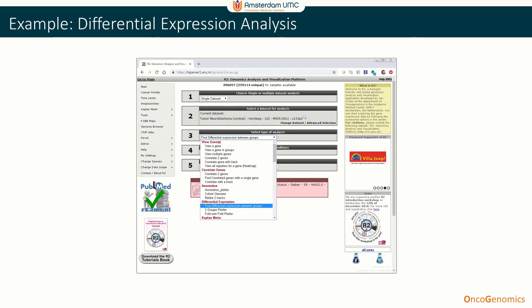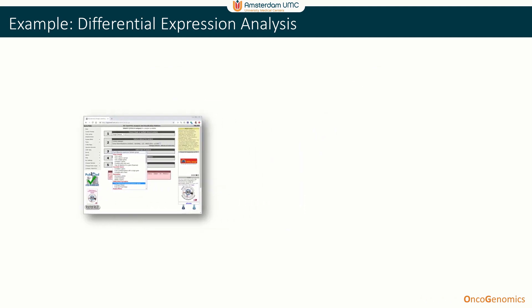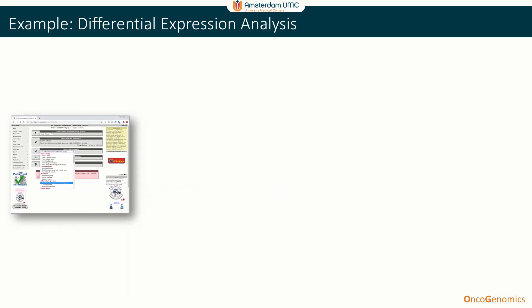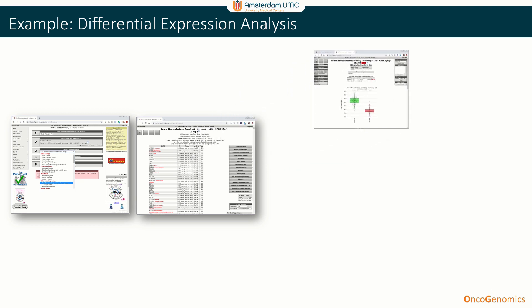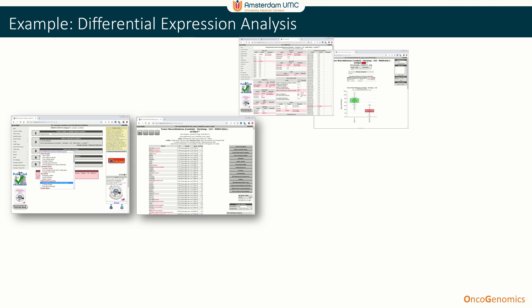To provide you with a sense of the R2 experience, a small example is used as illustration. Within R2, we can look for differential expression between two or more groups of a cohort or experiment. We simply initiate such a search via the main interface and obtain a table filled with results. This interactive table can then be used to explore the results gene by gene with additional analysis.